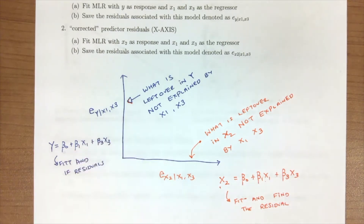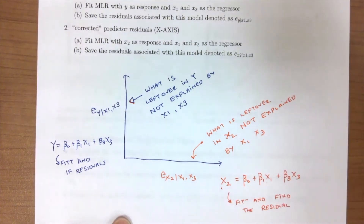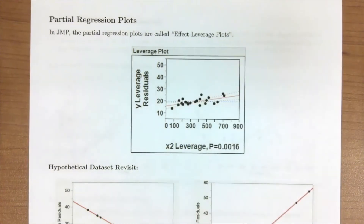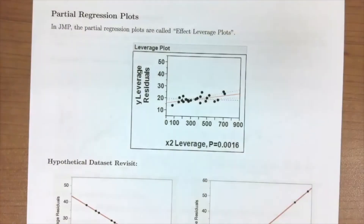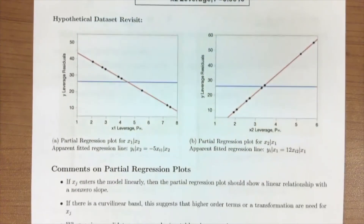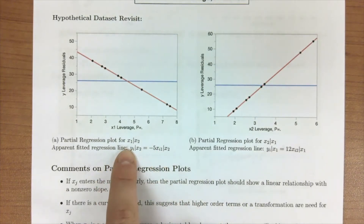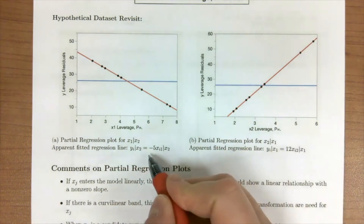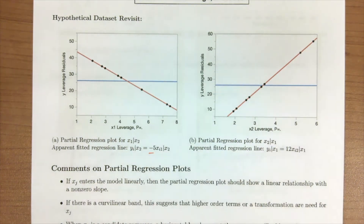One way of thinking about what this plot represents is that it helps us understand the partial regression tests we have looked at in JMP or in R. In JMP it's called the effect leverage plot — we'll show how to do this in a different video. With our hypothetical data, if we do the partial regression plots, we notice that given x2 is in the model and accounted for, our regression line for x1 now has that slope of negative 5, which matches our truth.